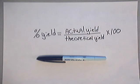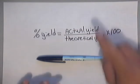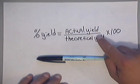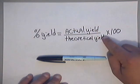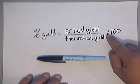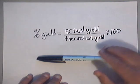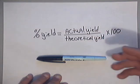Alright folks, tonight I'm going to show you how to calculate percent yield in chemistry. Percent yield is taking the actual yield, dividing it by the theoretical yield, then multiplying by 100. That way you get a percent, meaning out of 100.